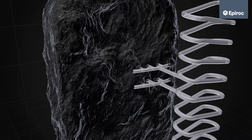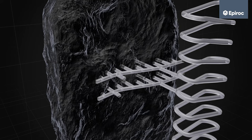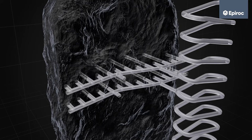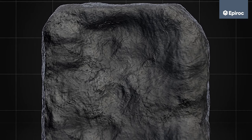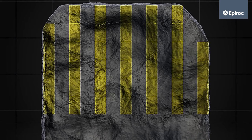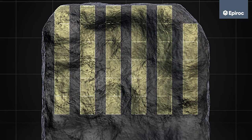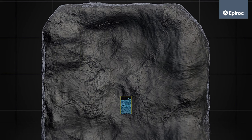Drifts are created through the ore body to enable mining of stopes between sublevels. The ore body can be divided into primary and secondary stopes, where the primary stopes are mined first.